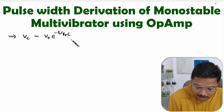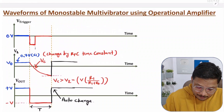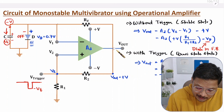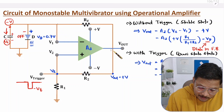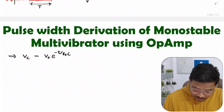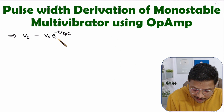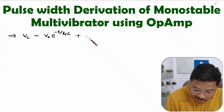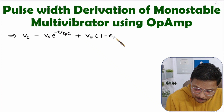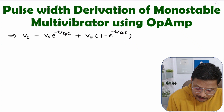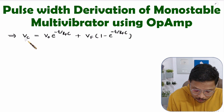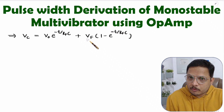Why RF·C? The reason is this capacitor is getting charged via resistance RF, so the time constant is RF times C. The full capacitor voltage equation is: VC = V0 · e^(−T / RF·C) + VF · (1 − e^(−T / RF·C)), where V0 is the initial voltage and VF is the final voltage toward which the capacitor charges.